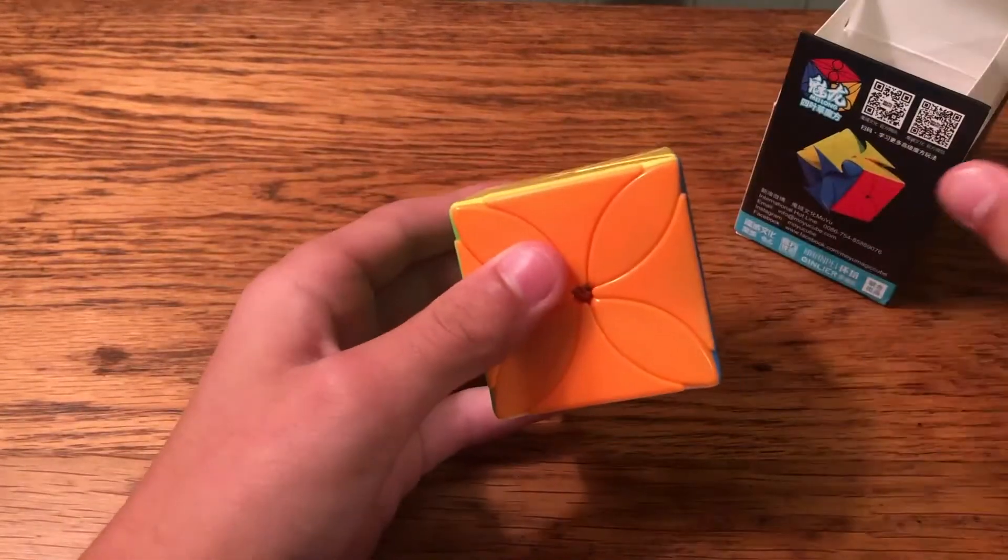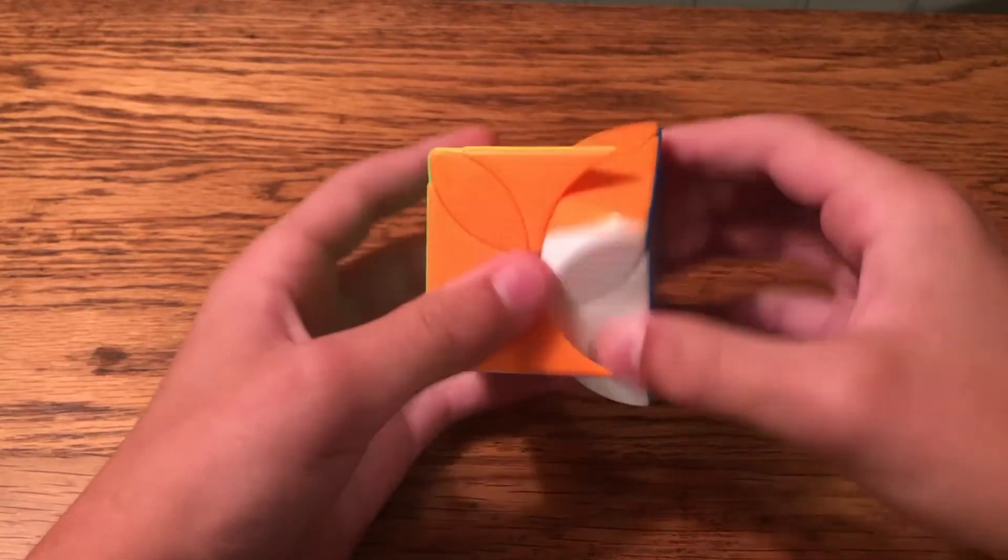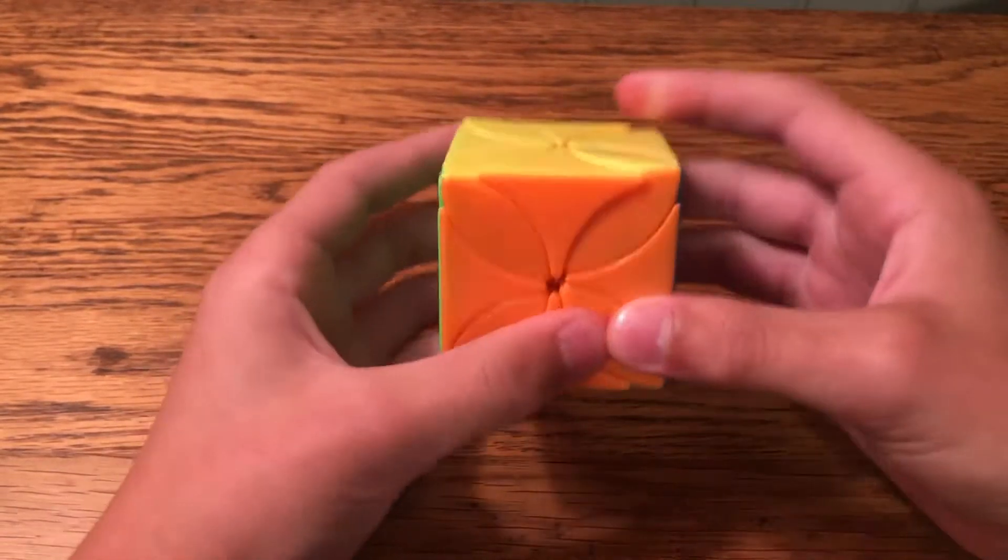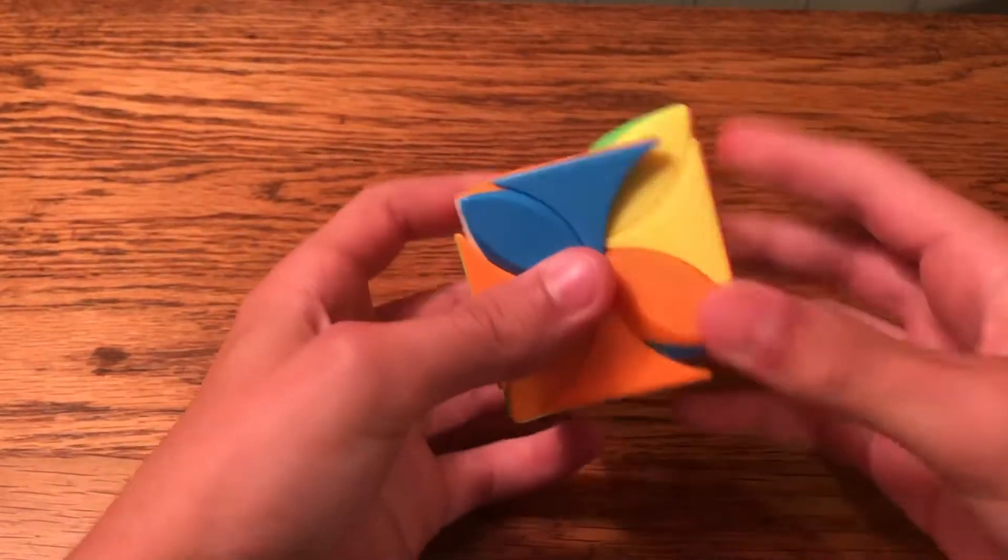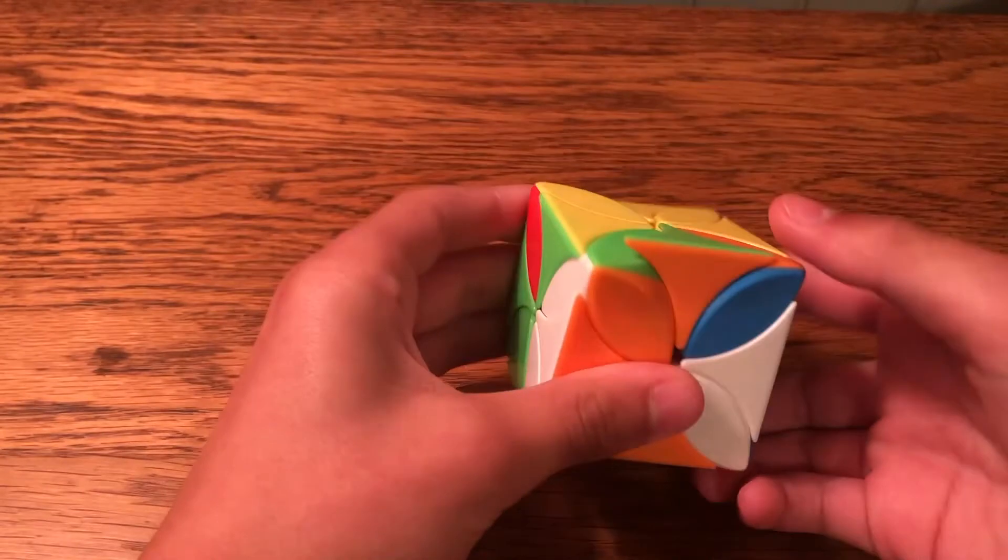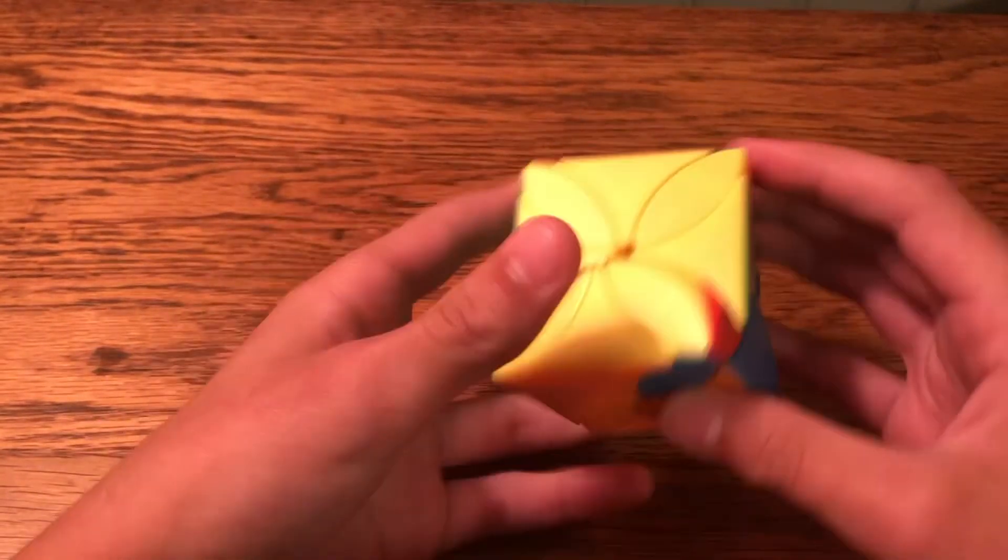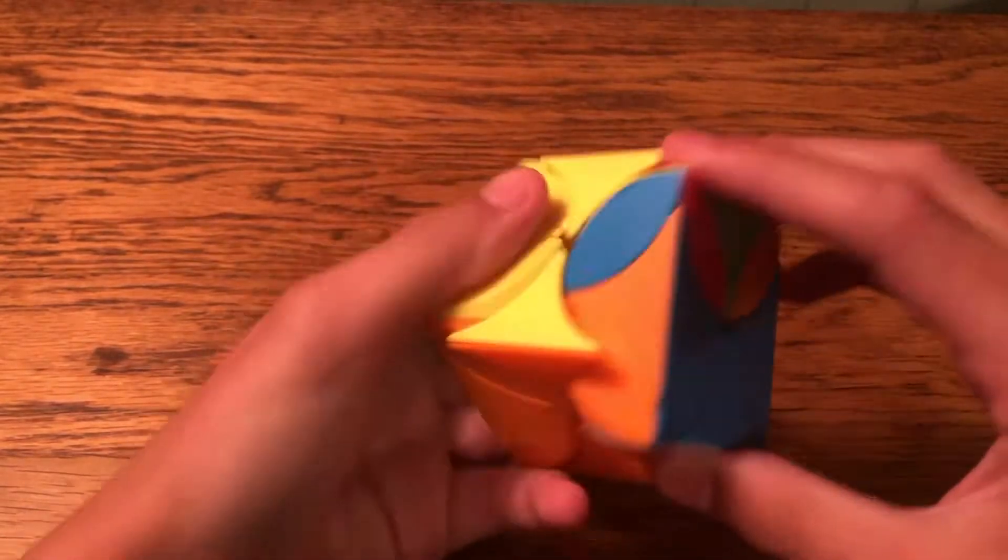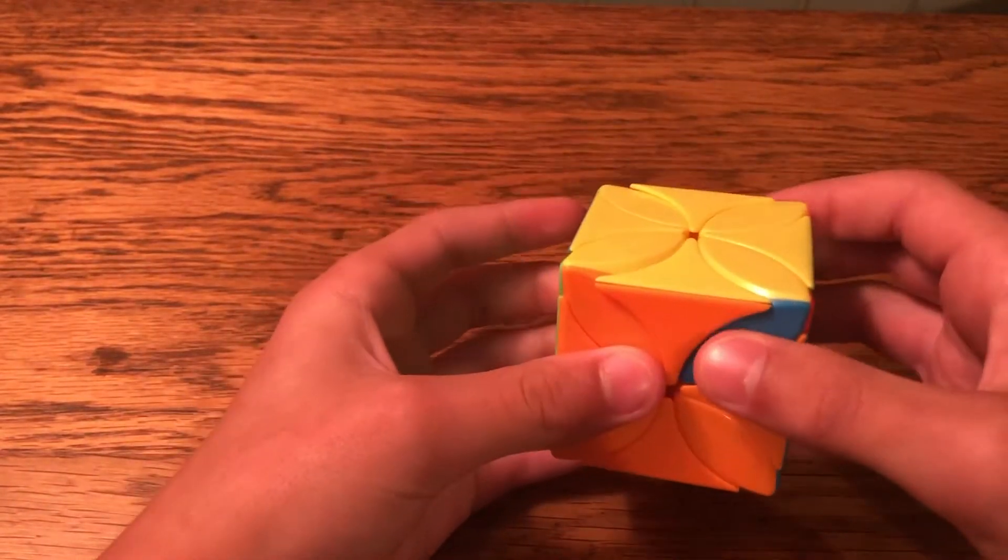So I think this solves just like a normal 3x3, just like this. So it appears to have a bit of lube right now on the outside, but let's just try an algorithm. Okay. So, yes, it definitely is like a normal 3x3. Like, these are the edges, these are the corners and stuff.